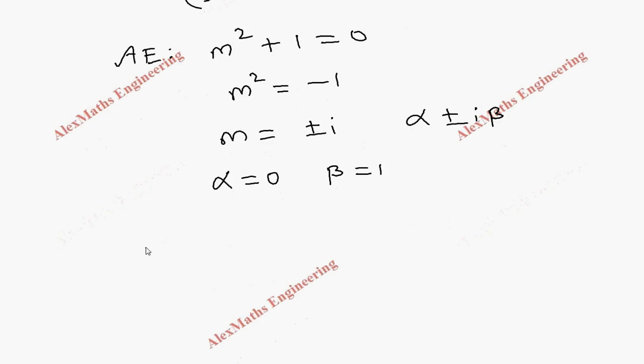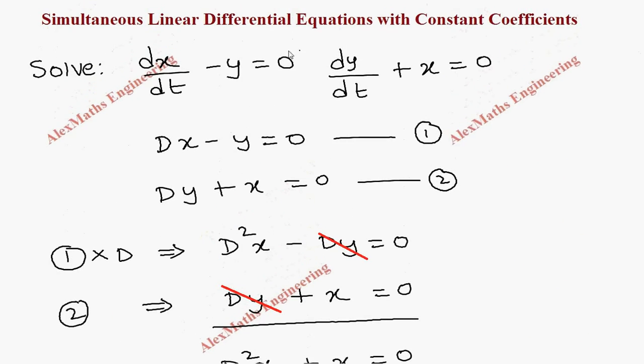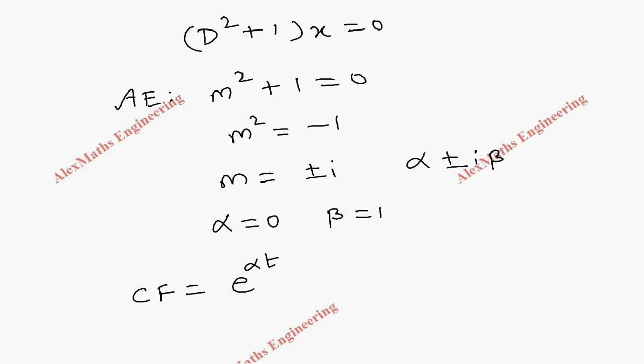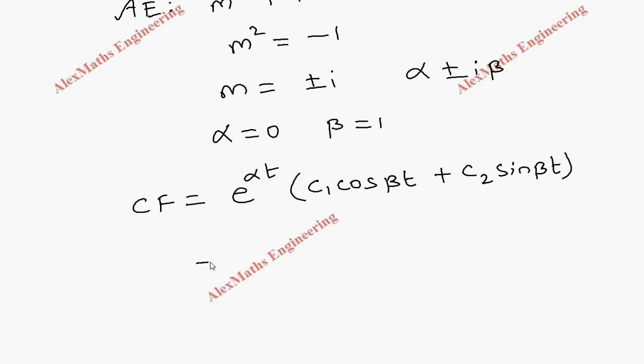Now, the complementary function is e^(αt)[c₁cos(βt) + c₂sin(βt)]. This equation is in the form of dx/dt and dy/dt. So in place of x, we have to write t bracket open c₁cos(βt) + c₂sin(βt). Now, let's replace the value of α which is 0 and β which is 1. So we get c₁cos(t) + c₂sin(t).